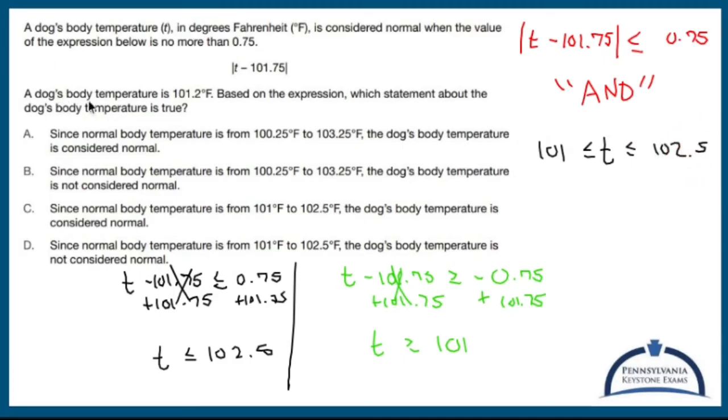So a dog's body temperature is 101.2, which is good. Based on the expression, which statement about the dog's body temperature is true? Since normal body temperature is from 100.25 to 103.25, the dog's body temperature is considered normal. Well, I mean, this part's true. The dog's body temperature is considered normal, but 100.25 and 103.25 are not the numbers that I need. So let's cross you out. Since normal body temperature is, same numbers. I don't like it.